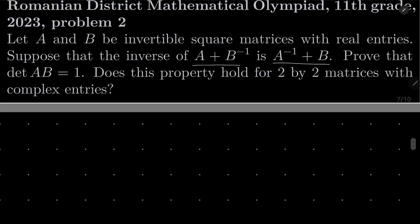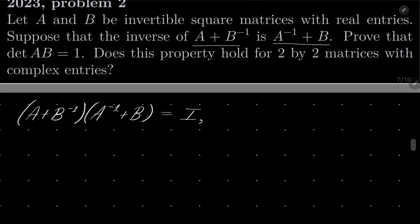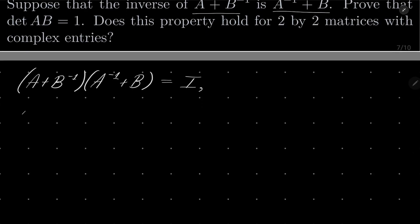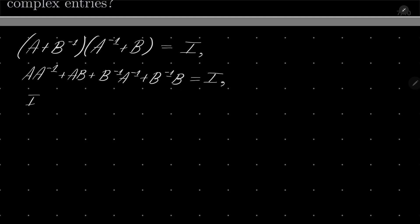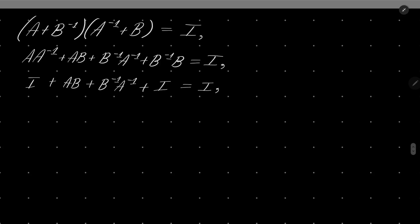We know that (a + b) to the power minus 1 times (a to the power minus 1 plus b) equals the identity matrix. Now, a times a inverse is identity. We also have ab, and b to the power minus 1 times a to the power minus 1 gives identity as well. And that means that ab plus identity plus identity plus b to the power minus 1 times a to the power minus 1 equals the zero matrix.